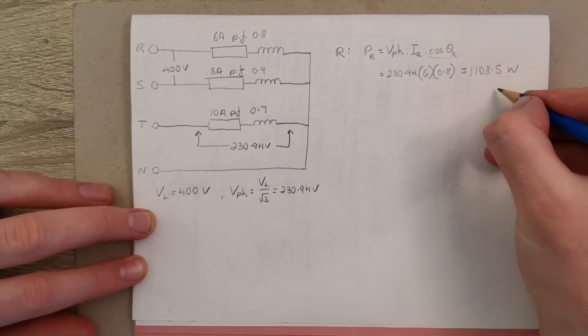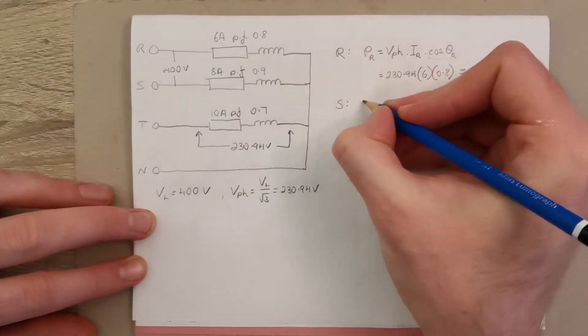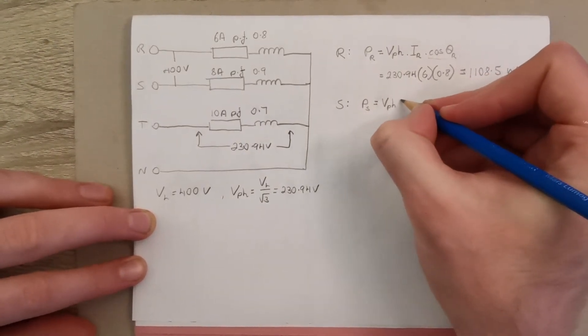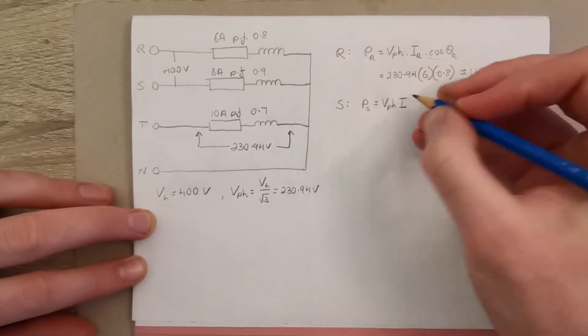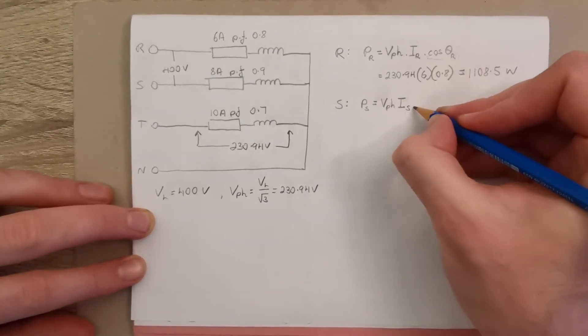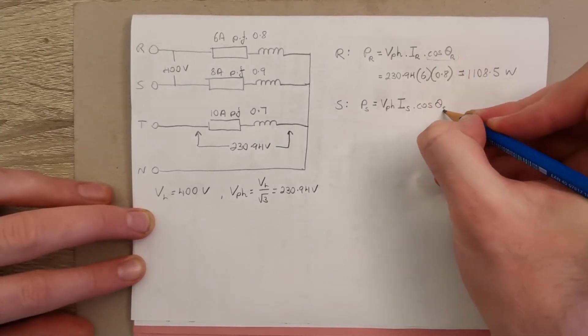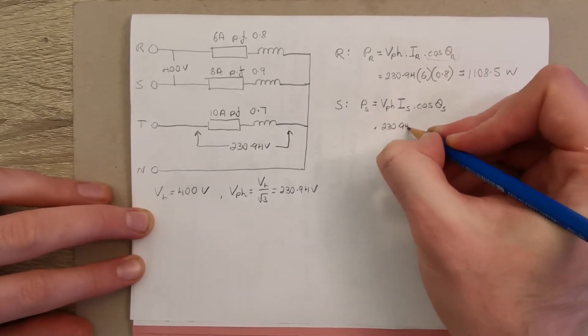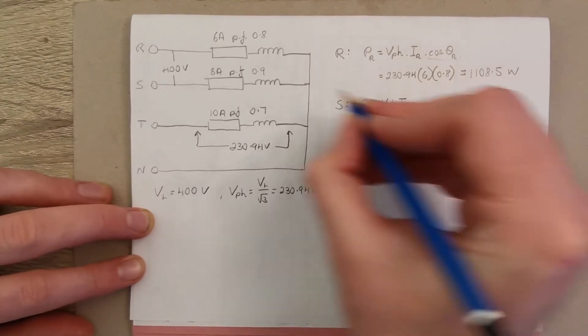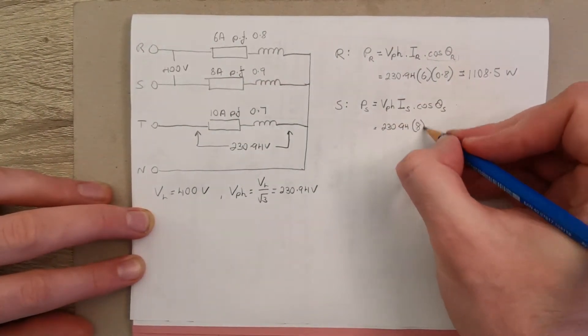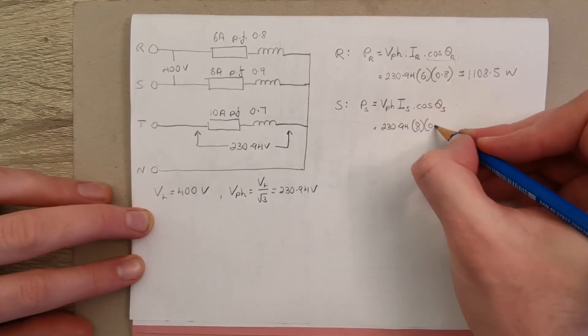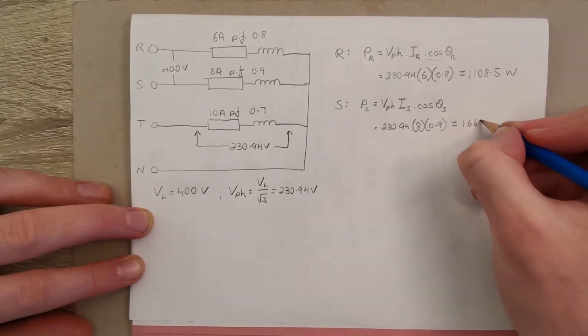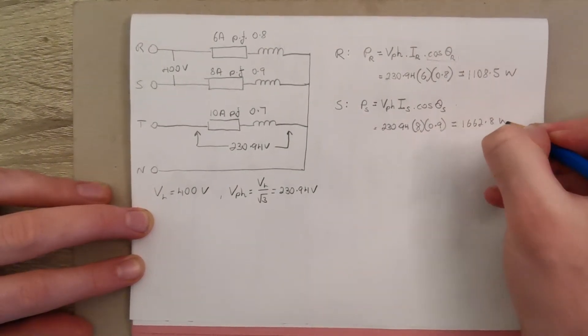Now we just repeat that process for each individual phase. Power in our S phase will be again the phase voltage times the phase or line current, they're the same here because it's star connected, times the power factor. So 230.94, line current here is 8 amps, power factor is 0.9, that works out at 1,662.8 watts.